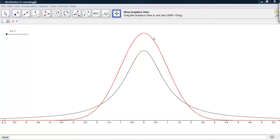The red curve represents the standard normal distribution, and this black curve represents the t-distribution.